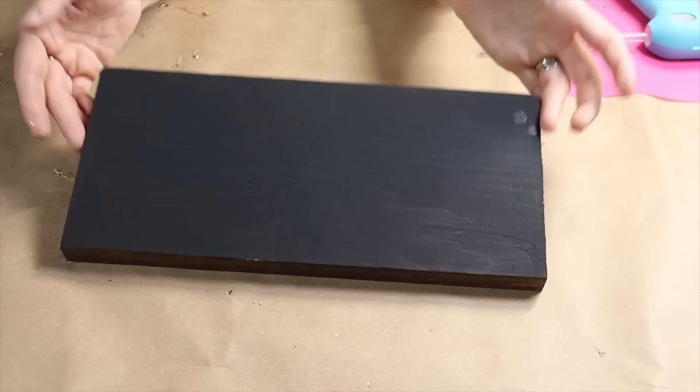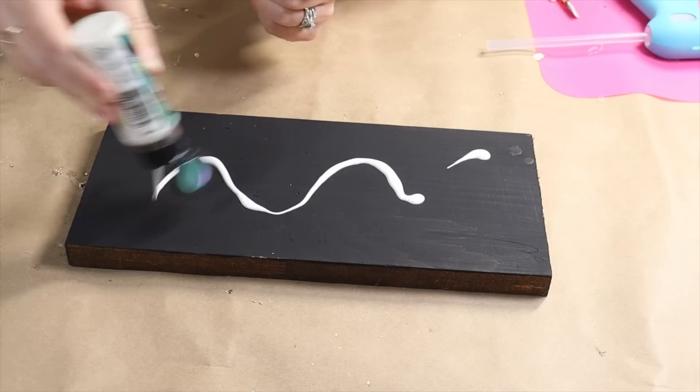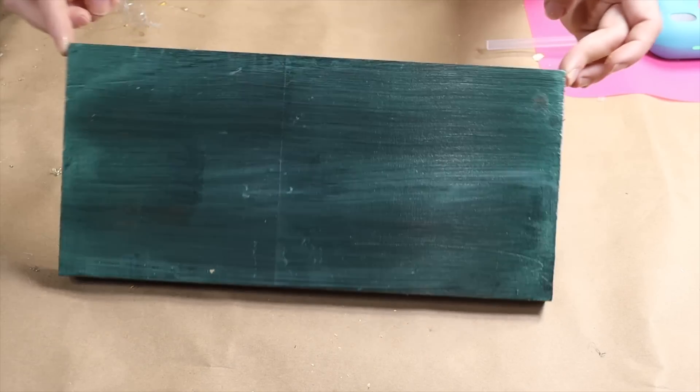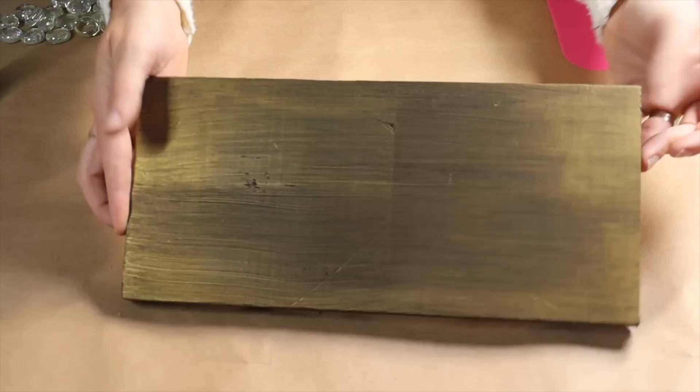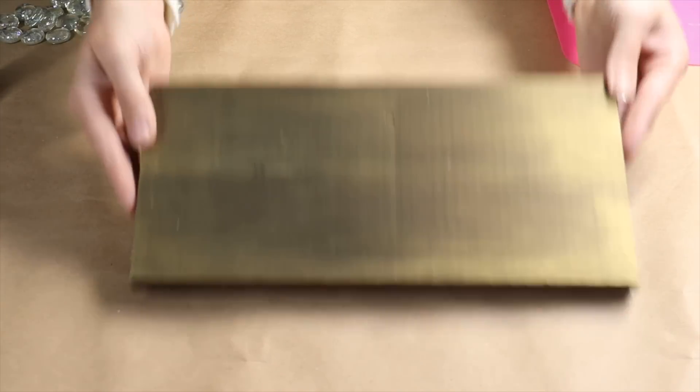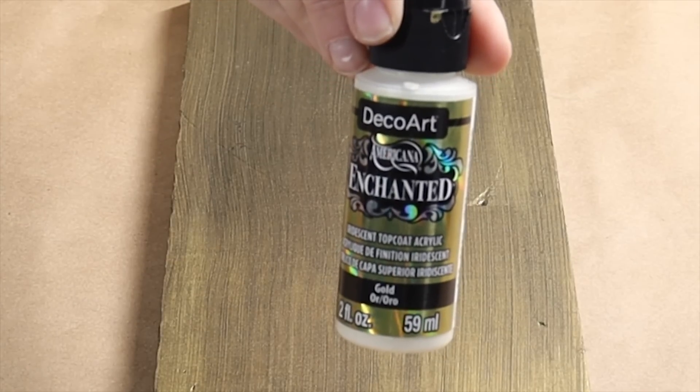This black paint that I'm putting on here is the base coat, and then I came in with the DecoArt Enchanted in green. This is the stunning iridescent top coat that we're going to paint on, and this is done with the gold, so in the same line just a different color.